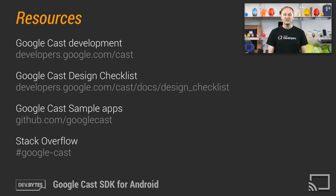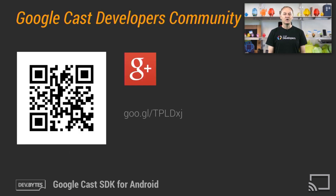You can get more details about the Google Cast SDK at developers.google.com/cast. It's also important to take a look at the Cast Design Checklist, which has design implications for your app. We have also open-sourced sample Cast apps that you can use as a reference. If you have any developer questions, post those on Stack Overflow. Join our Google Cast developers community on Google+. Happy Casting!